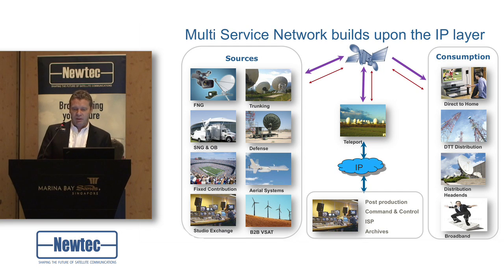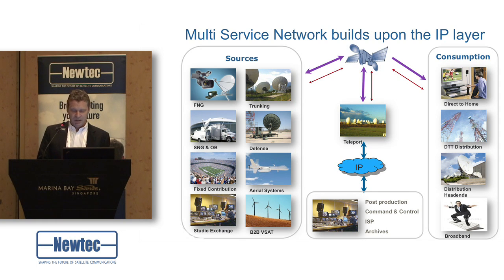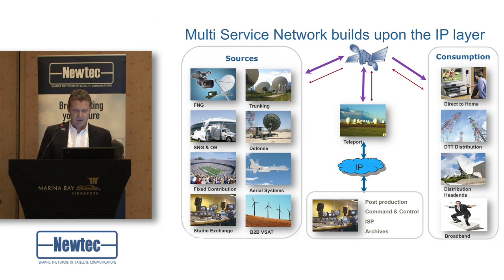The consumption side is of course direct-to-home, DTT, distribution to head-ends, as well as broadband. Imagine that all these services can now run together on a single satellite fleet — that would be very nice. We can easily build that if every service has its own carrier, but that's not at all efficient. The key thing is making multi-service networks really efficient and manageable from a single point.